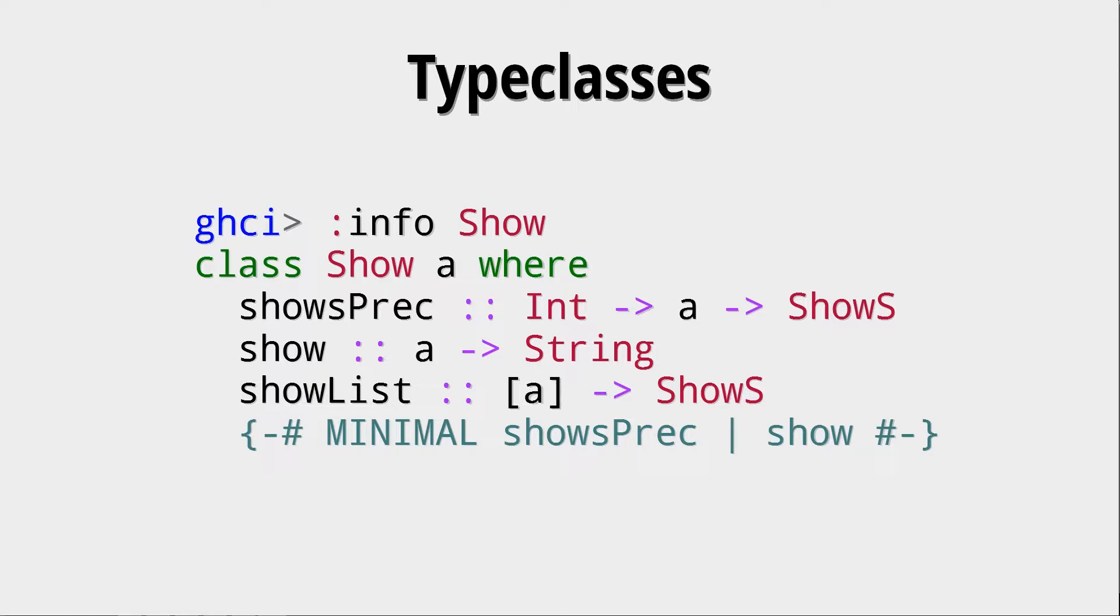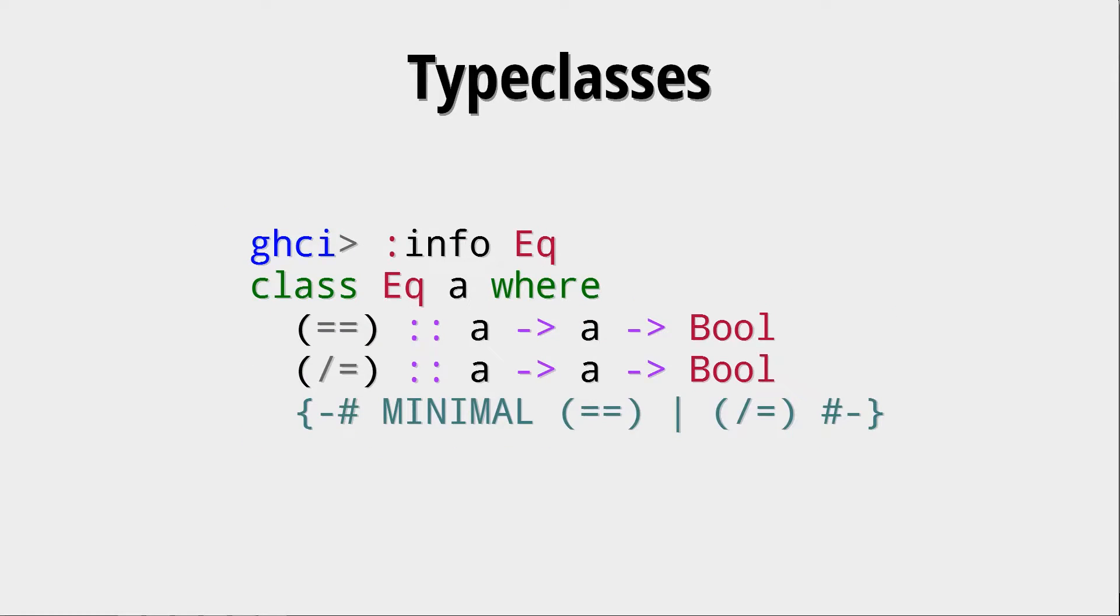We actually only need to create either showsPrec or show. And if we have one of these functions, all the other functions are implied. That's a point where Haskell can then derive the other functions from. Just like here in this Eq type class, where we have types that can be tested on equivalence, here we only need to define equals or not equals, and of course the other function then is derived from the Boolean inversion of the other function.